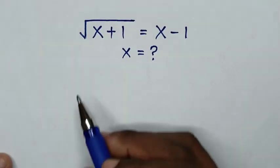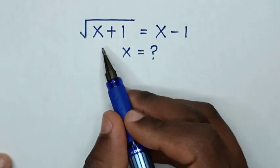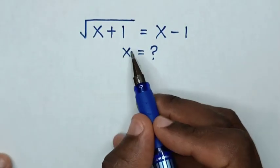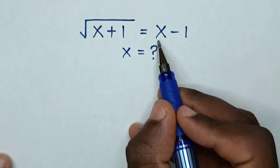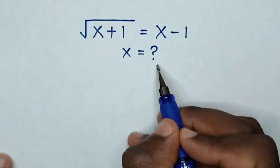Hello! How to solve square root of x plus 1 is equal to x minus 1 to find the value of x?